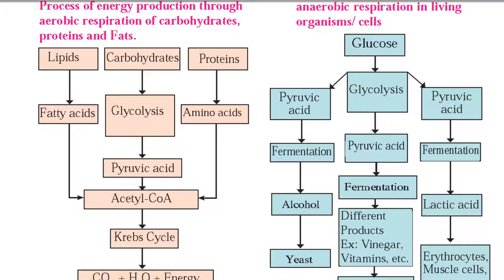Good morning students. In the previous video we saw the process of energy production — aerobic respiration of carbohydrate, protein, and fat. Aerobic means with oxygen, so energy is produced with the help of oxygen. When we take carbohydrates, they are decomposed into glucose. This glucose is oxidized in the process of glycolysis and forms ATP, pyruvic acid, carbon dioxide, water, and NADH2.